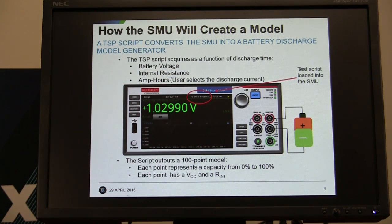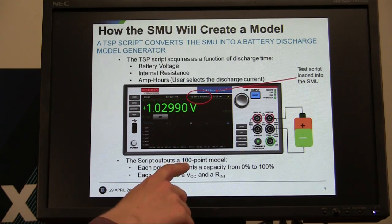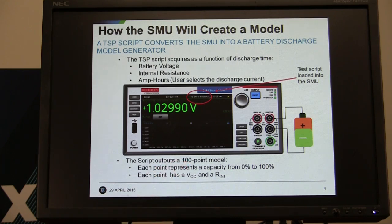When it's done discharging the battery, it's going to produce a 100-point model that can then be loaded back into the 2281S battery simulator to be used to simulate a battery.